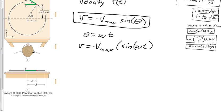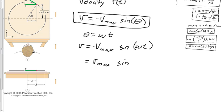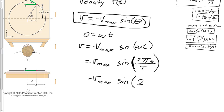Since θ can be expressed as ωt, I substitute: velocity equals negative v_max times sine(ωt). This is also equal to negative v_max times sine(2π·t/period), since ω equals 2π radians per period.